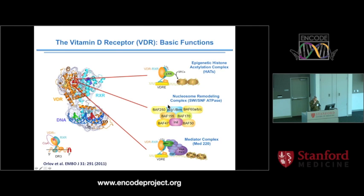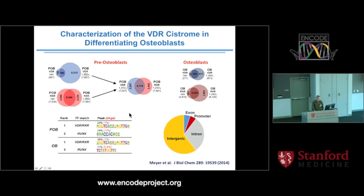The problem with those early studies was that they were very receptor-centric and only a few genes could be looked at. So a few years ago, with the availability of new approaches, we began to use ChIP-chip and then ChIP-seq analysis to actually search for the vitamin D receptor cistrome — to understand where it was binding in various cell types, including bone, which was a particularly interesting one.